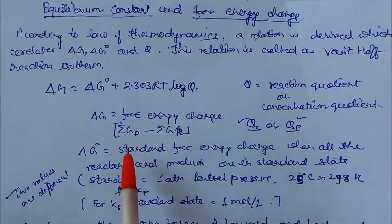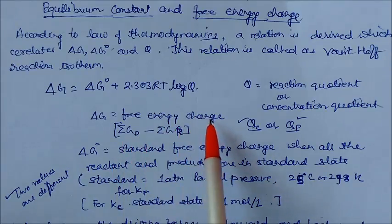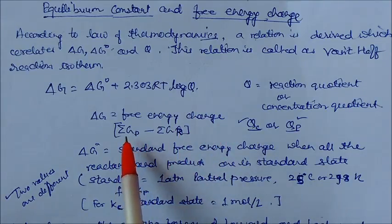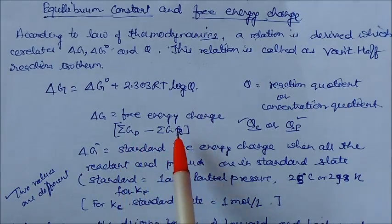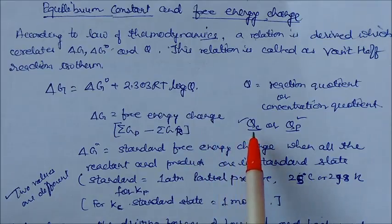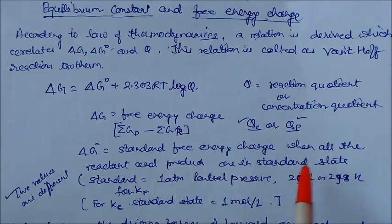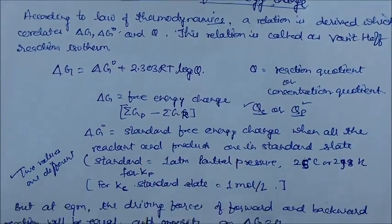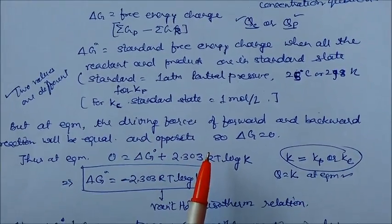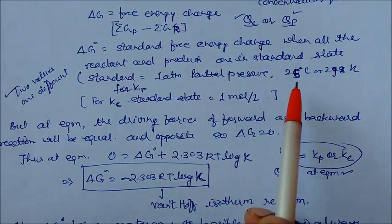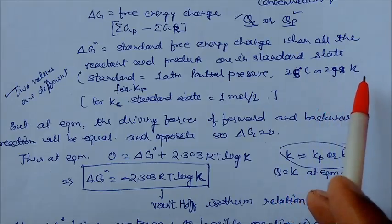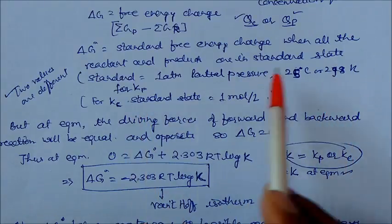Free energy change means the summation of free energy of products minus free energy of reactants. Q can be the concentration quotient or the pressure quotient. Delta G° means the standard free energy change when all reactants and products are in their standard state — that is, one atmospheric partial pressure at 25°C or 298 K.